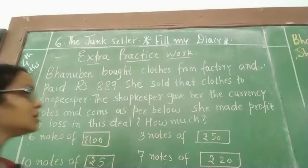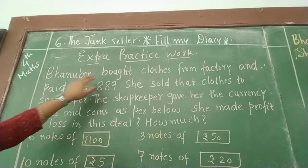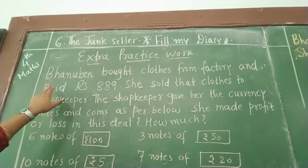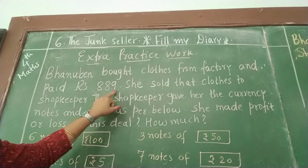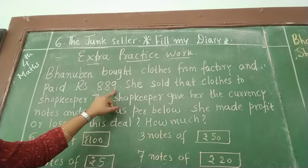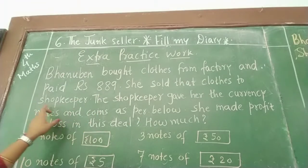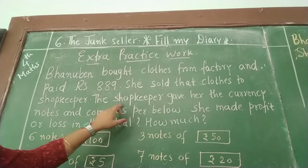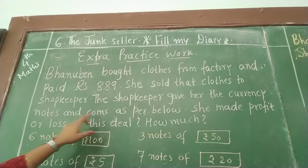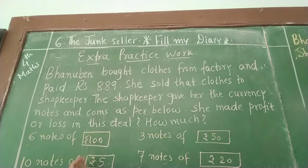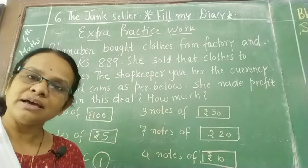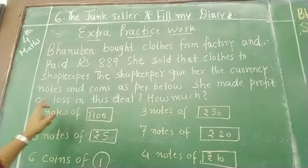Let's read what is written there. It is written: Banu Ben is a person who already bought clothes from the factory. In the factory, she paid Rs. 889. She sold those clothes to the shopkeeper. The shopkeeper gave her currency — notes and coins. What is the meaning of currency? Currency means the rupees, the notes, the coins. And she made profit or loss — that we have to find out.